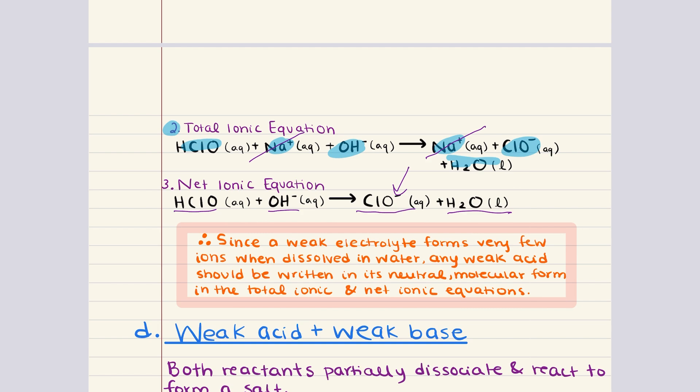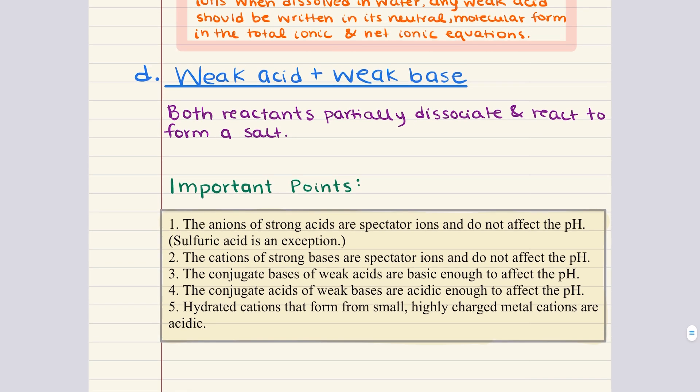Finally, we can discuss weak acid with a weak base. In a reaction with a weak acid and a weak base, both reactants partially dissociate and react to form a salt. The net ionic equation highlights the formation of the conjugate acid and base, and the pH of the resulting solution depends on the relative strengths and extents of hydrolysis of the conjugate acid and base.